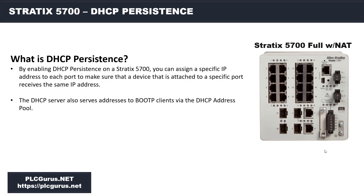What I wanted to do today was look at something called DHCP persistence. Every device in an IP-based network must have a unique IP address assigned to it. DHCP assigns IP address information from a pool of available addresses to newly connected devices. Without DHCP persistence enabled, if a device leaves the network and then rejoins, the device would receive the next available IP address, which may or may not be the same address it had before.